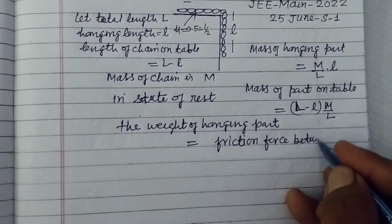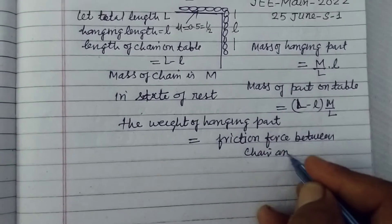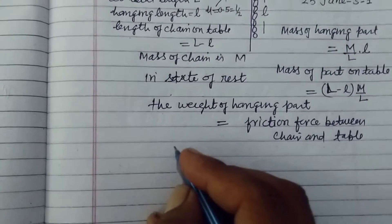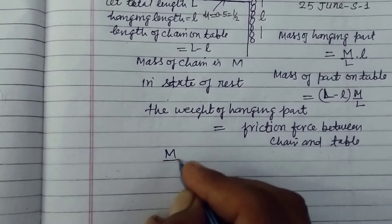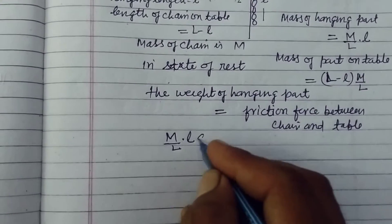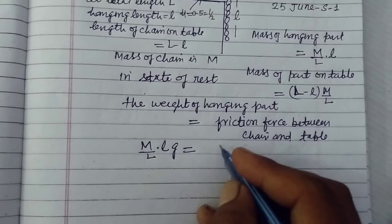So weight of the hanging part is M upon L into l, this is the mass, times G equal to mu R. Mu R is L minus l into M upon L into G.